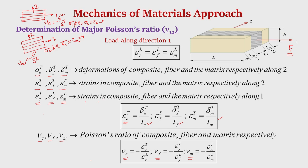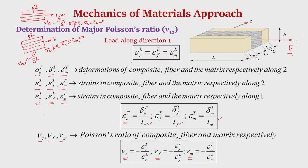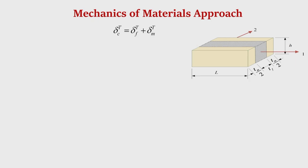From the condition of perfect bonding for this RVE, the strain in the longitudinal direction in the composite, fiber, and matrix is the same — this assumption was also used in the determination of longitudinal Young's modulus. Since it is loaded along direction 1, epsilon_CL, epsilon_FL, and epsilon_ML are equal. Looking at the 1-2 plane with the fiber and surrounding matrix loaded in direction 1, it extends along direction 1 and contracts along direction 2 because of the Poisson's effect.